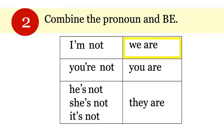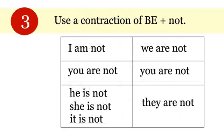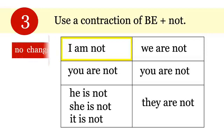The rest of these use 'are,' so they follow the same pattern: 'we are not' becomes 'we're not,' 'you're not,' 'they're not.' The third way to form the negative is to use a contraction of Be and 'not.' You cannot use this way for 'I.'